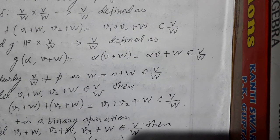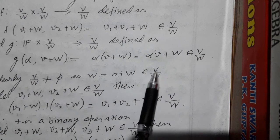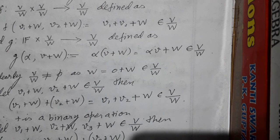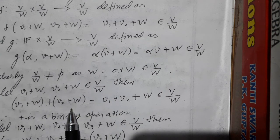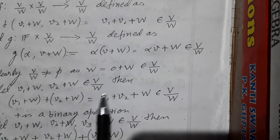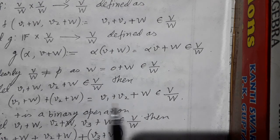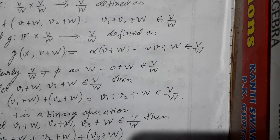Now we will show V/W is a vector space. First, it is non-empty because W = 0 + W belongs to V/W. To show it is an abelian group, we check the binary operation: taking V1 + W and V2 + W in V/W, their sum is V1 + V2 + W. Since V is closed under addition, V1 + V2 belongs to V, so the result belongs to V/W. Thus addition is a binary operation.